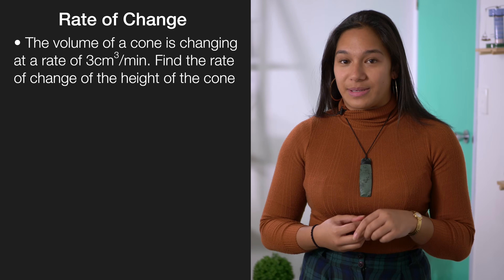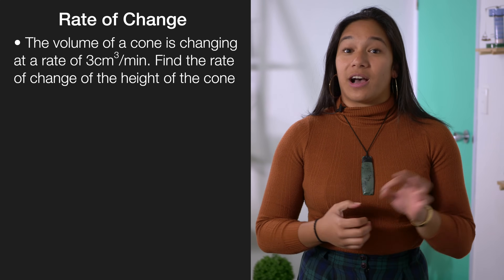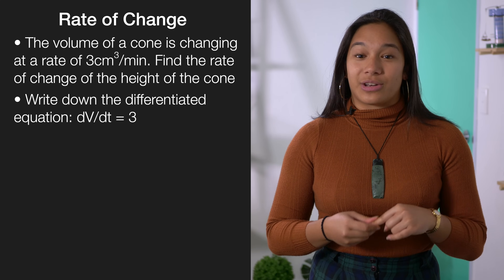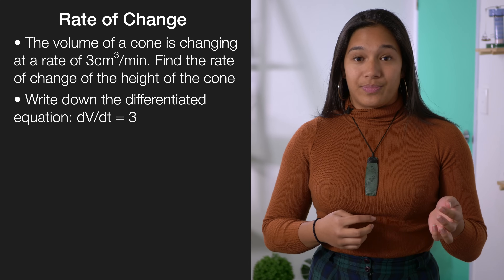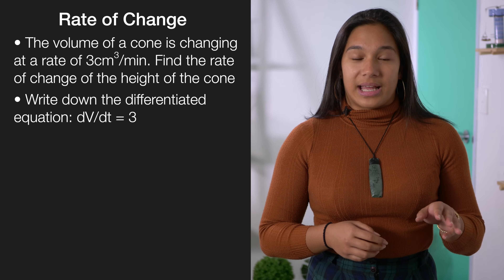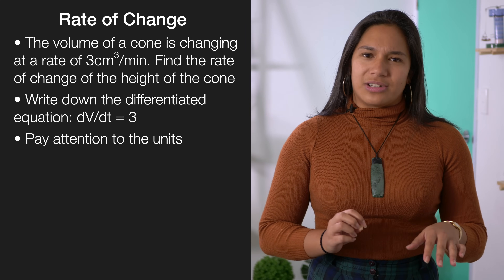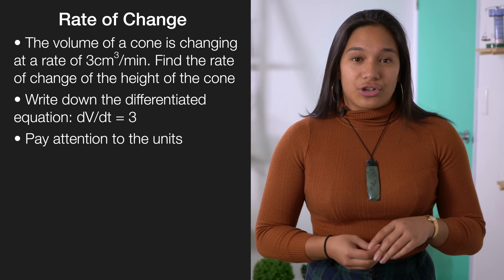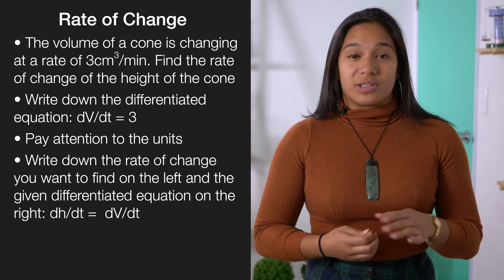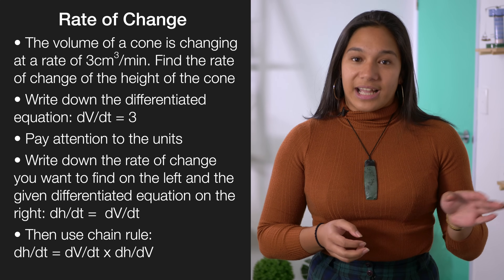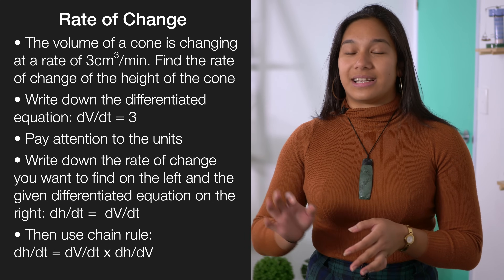The second type of excellence question is a rate of change question. For example, the volume of a cone changes at a rate of three centimeters cubed per minute — what's the rate of change for the height of the cone? Break this down into four steps. First, write down the differentiated equation you already know: dv over dt equals 3, adding the necessary units. Second, write down the equation for the rate of change you want to find, using the chain rule: dh over dt equals dv over dt times dt over dh.